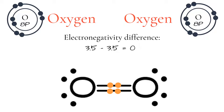The polarity of a molecule is determined by the type of bonds in the molecule and also the symmetry of the molecule. If a bond is between two atoms that are the same, like in the case of oxygen gas, the bond is non-polar because the two atoms have the exact same electronegativity, or pull, on the bonded electrons. As the bonded electrons are shared evenly between the two atoms, there is no permanent slightly negative end or slightly positive end. This means there is no separation of charges, called a dipole, across the bond.